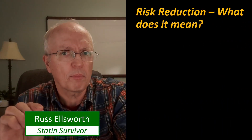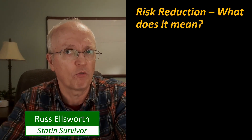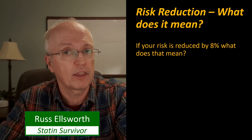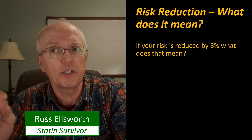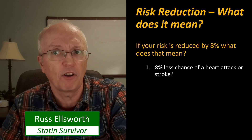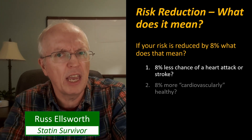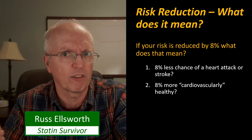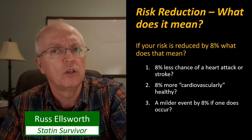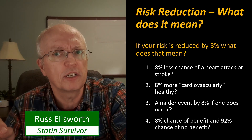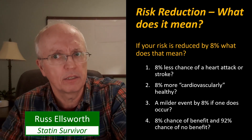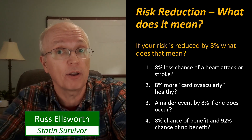To throw another wrench into the works, the other probability besides the cardiovascular event risk is the risk reduction you could theoretically get from taking some kind of therapy — in this case, statin therapy. So if your risk is reduced by 8%, what does that mean? Does it mean you have an 8% less chance of a heart attack or stroke? Does it mean you're 8% more cardiovascularly healthy? Does it mean that if you did have a heart attack, it would be milder by 8%? Or does it mean there's an 8% chance of benefit and a 92% chance of no benefit? A clinical trial actually tells you it's number four.